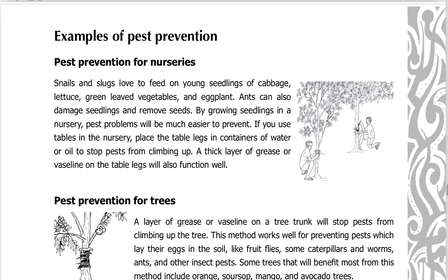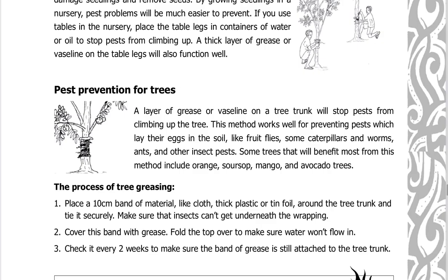Examples of pest prevention — pest prevention for nurseries. Snails and slugs love to feed on young seedlings of cabbage, lettuce, green leafy vegetables, and eggplant. Ants can also damage seedlings and remove seeds. By growing seedlings in a nursery, pest problems will be much easier to prevent. If you use tables in the nursery, place the table legs in containers of water or oil to stop pests from climbing up.